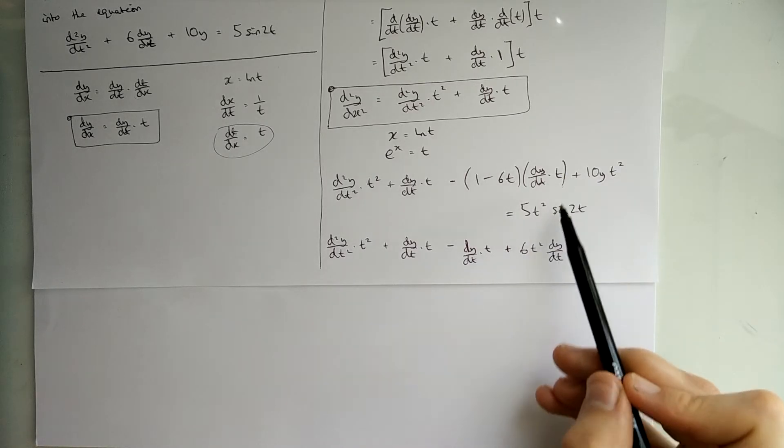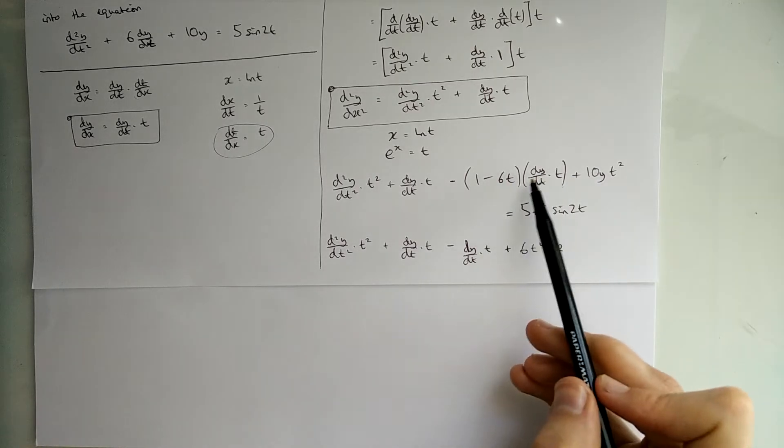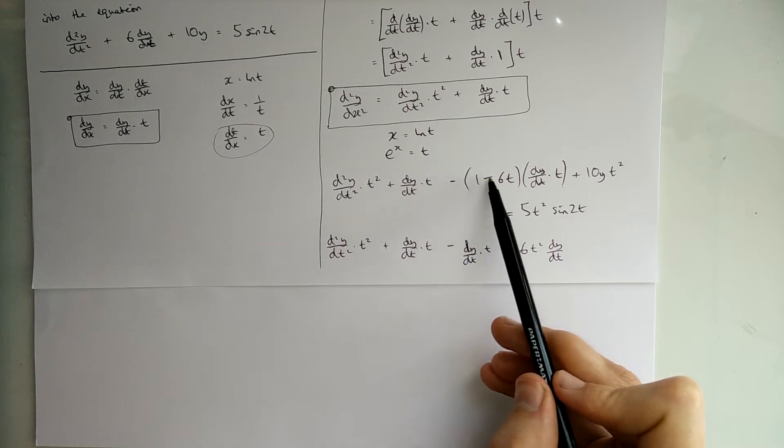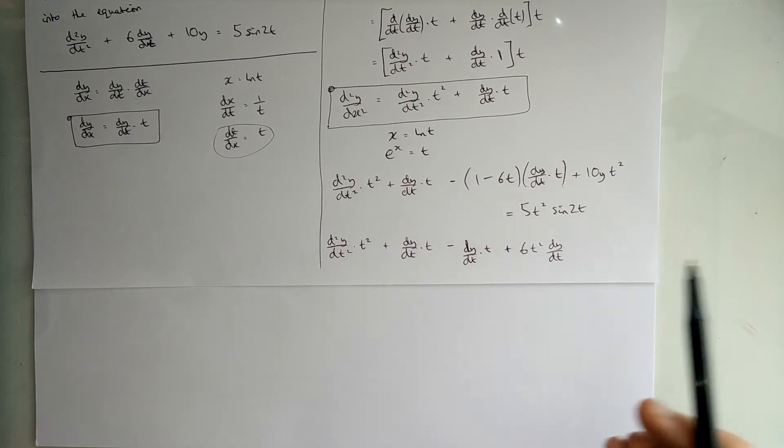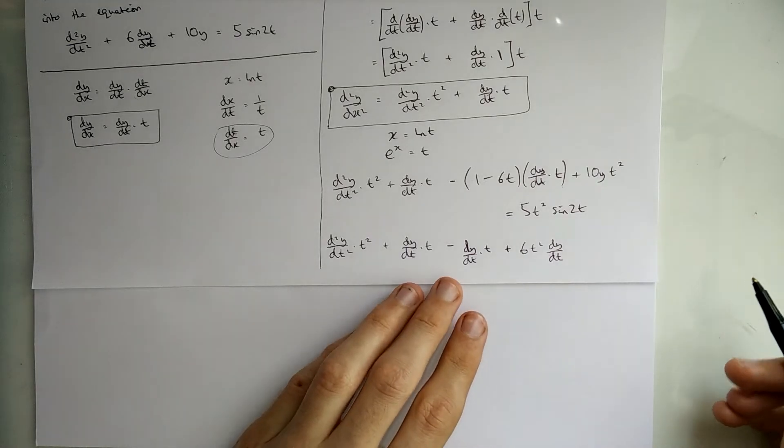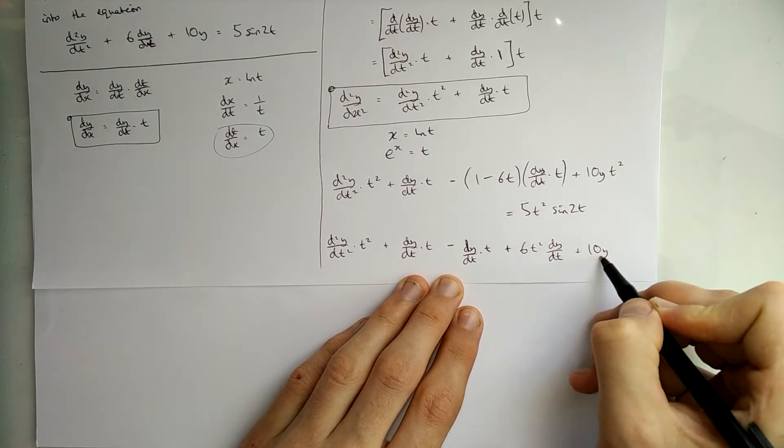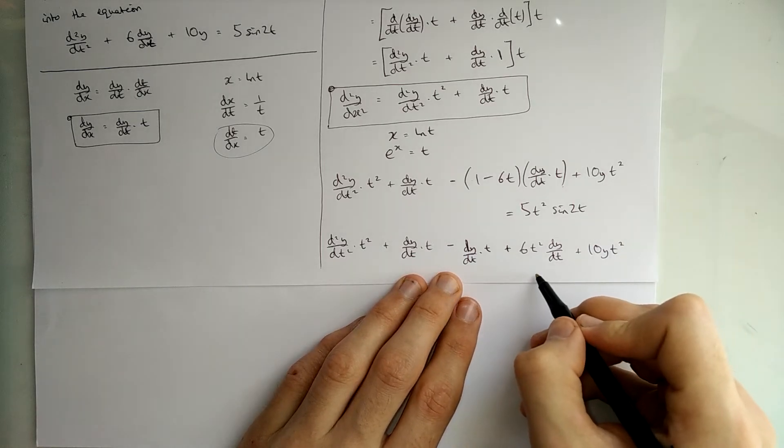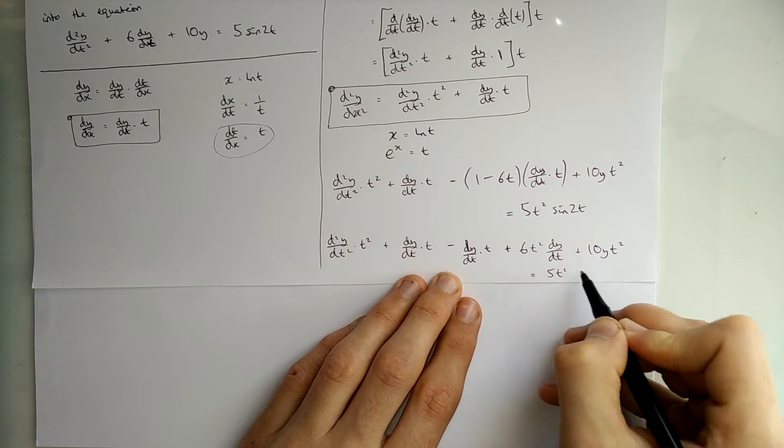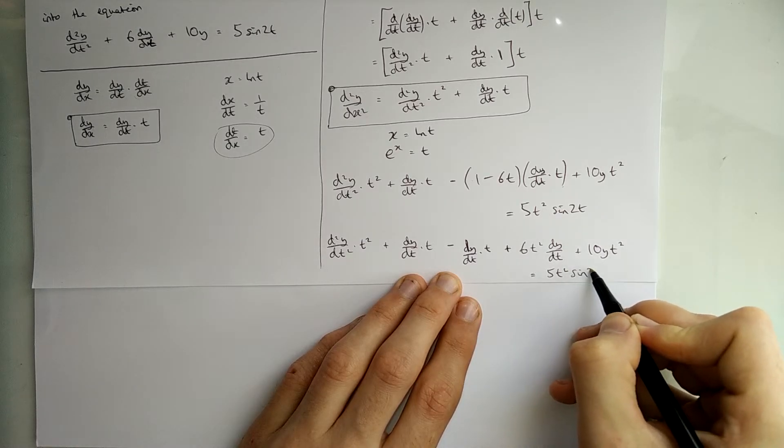I've got 2t². That makes sense. Here the 1 means it's just going to be the same thing. And the minus sign means both these signs changed. That plus sign is now minus and that minus sign is now plus. So, I've done everything I need to do. Then I've got plus 10y t². And that is still equal to 5t² times sine 2t.